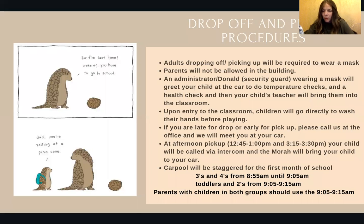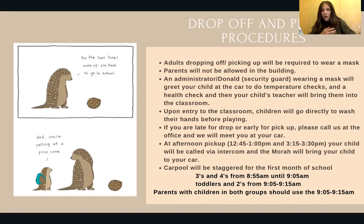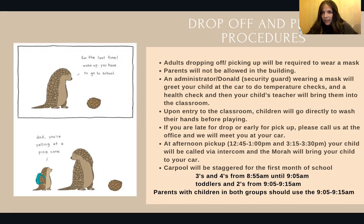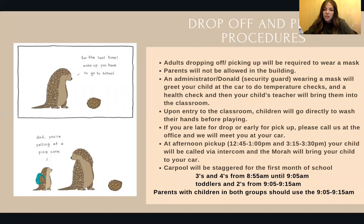For the first month of school we're going to do a staggered drop-off. We know that toddlers and twos take a little longer to go from their parents' hands to the teacher's hands, especially at the beginning when they're still adjusting, compared to your three or four year old who just jumps out and runs off. So we'll start with threes and fours from 8:55 to 9:05 — a 10-minute window. The threes and fours moras will be standing outside. Then toddlers and twos will be the second shift from 9:05 to 9:15 — that's when those moras will be outside.